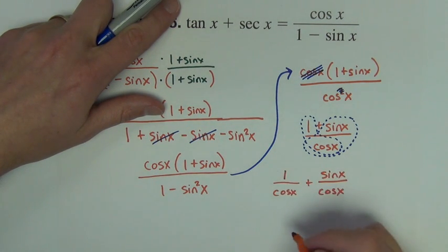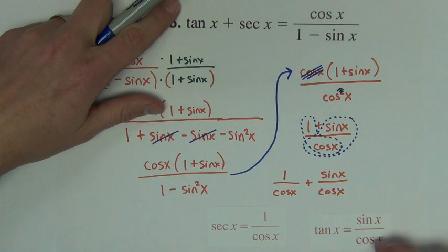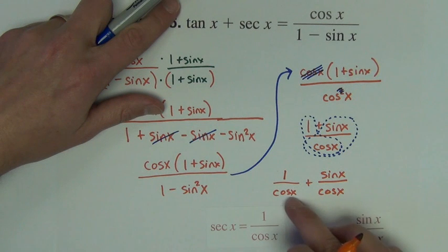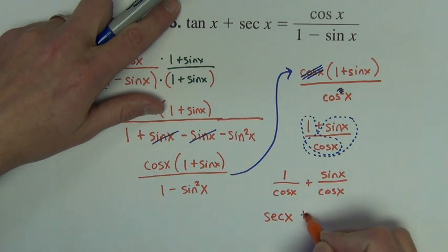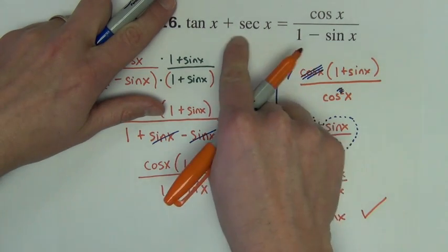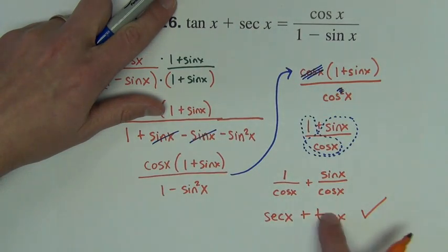Now we're almost finished. We have the fact that 1 divided by cosine is equal to secant. We also have the fact that sine divided by cosine is equal to tangent. Notice we have both of those fractions right here, so we're going to pull two substitutions and we'll be finished. 1 divided by cosine is secant, sine divided by cosine is tangent. That's what we were trying to get, a secant plus a tangent, or vice versa. That's exactly what we've got.